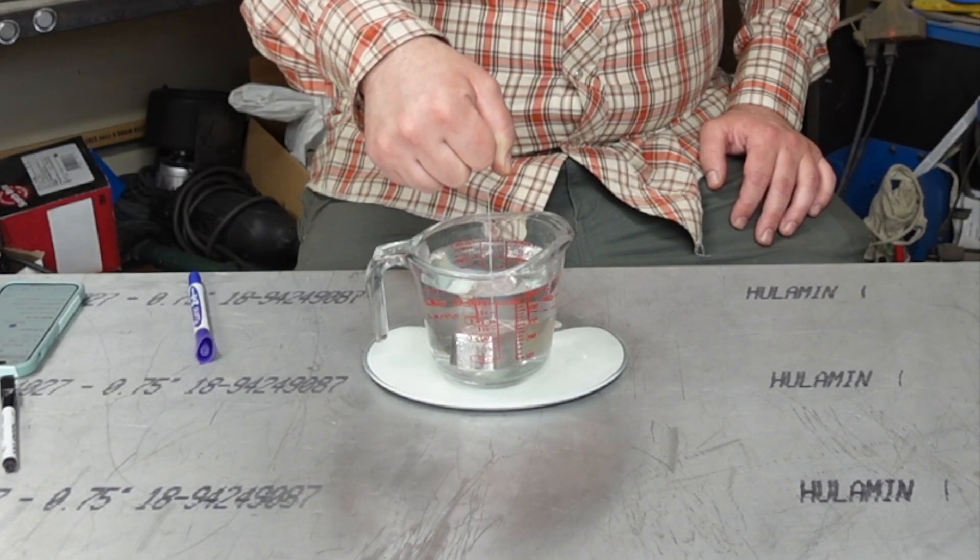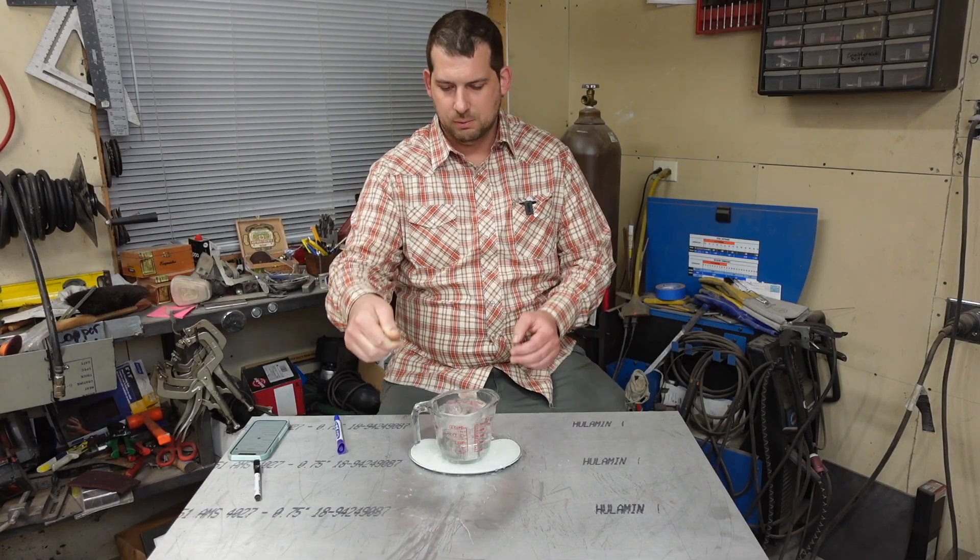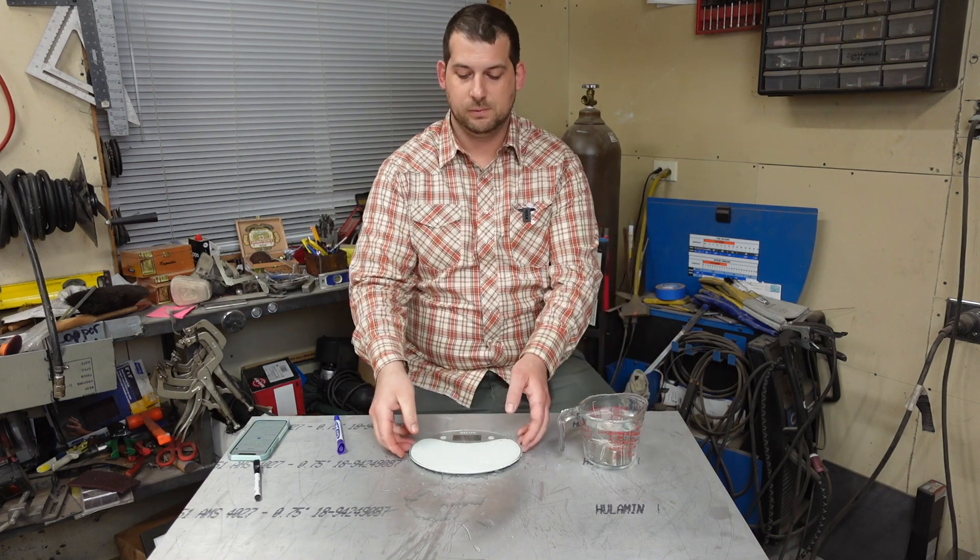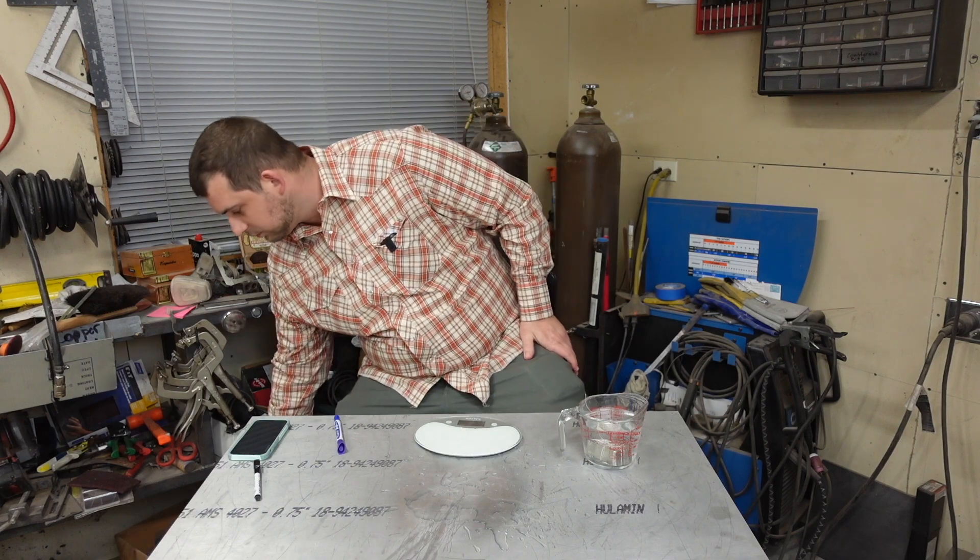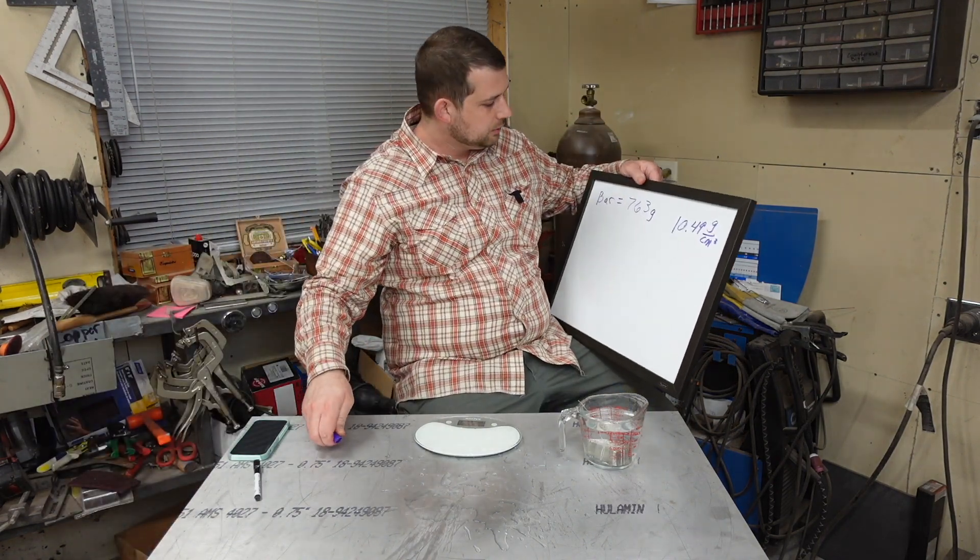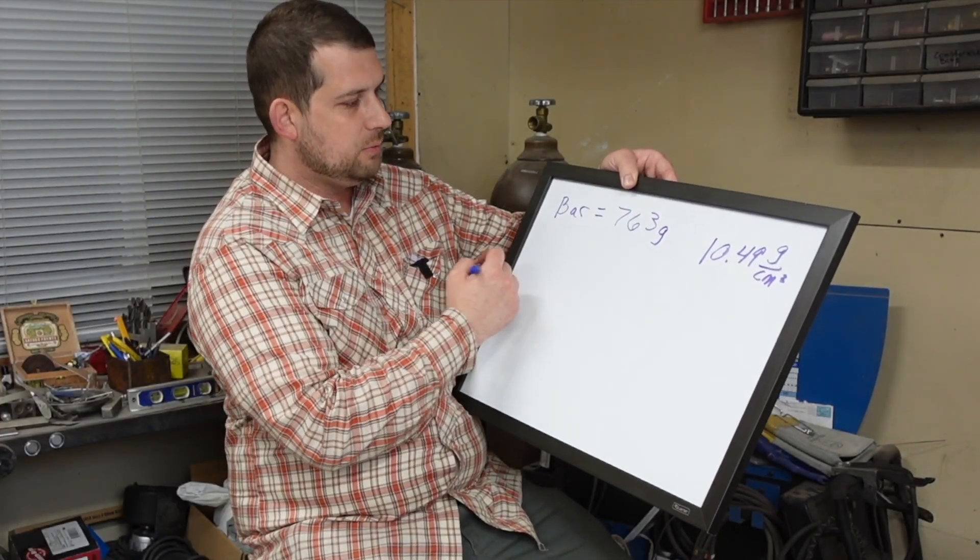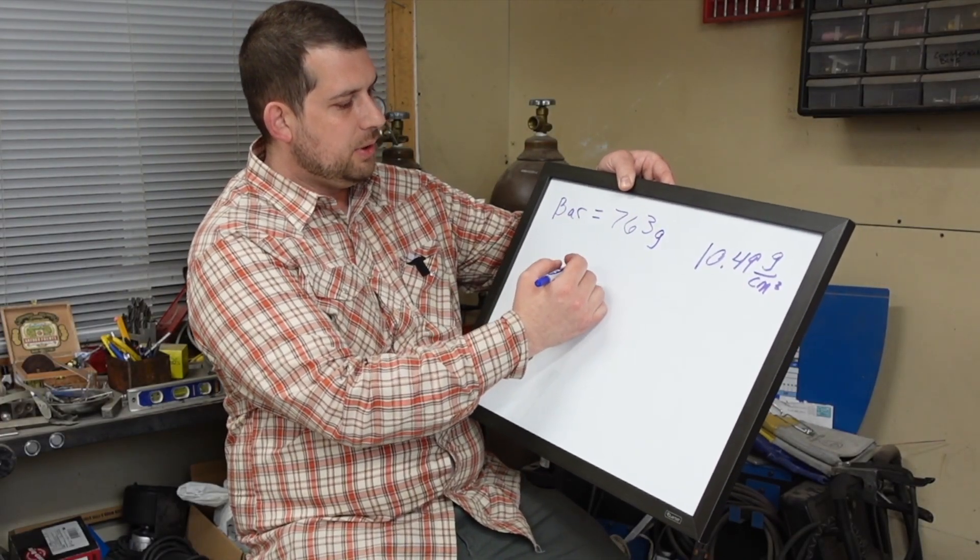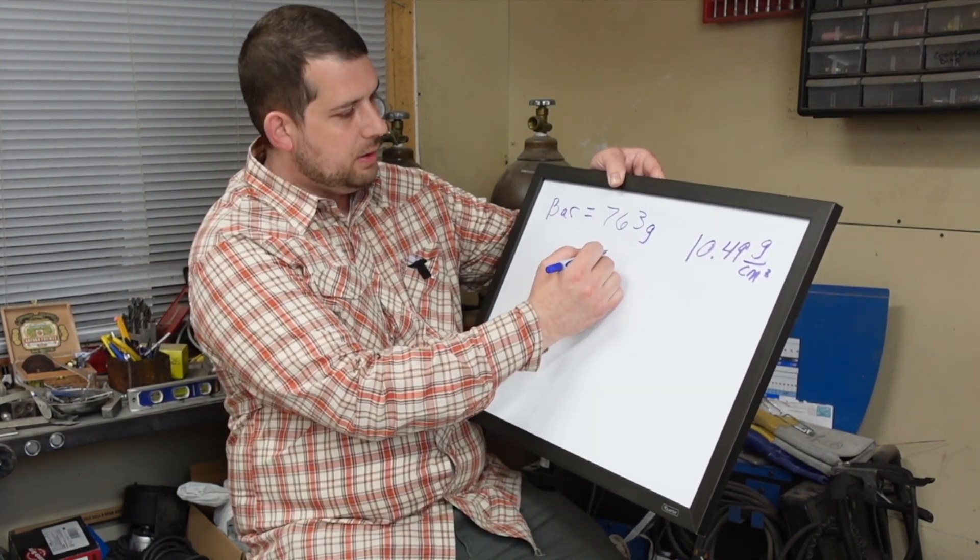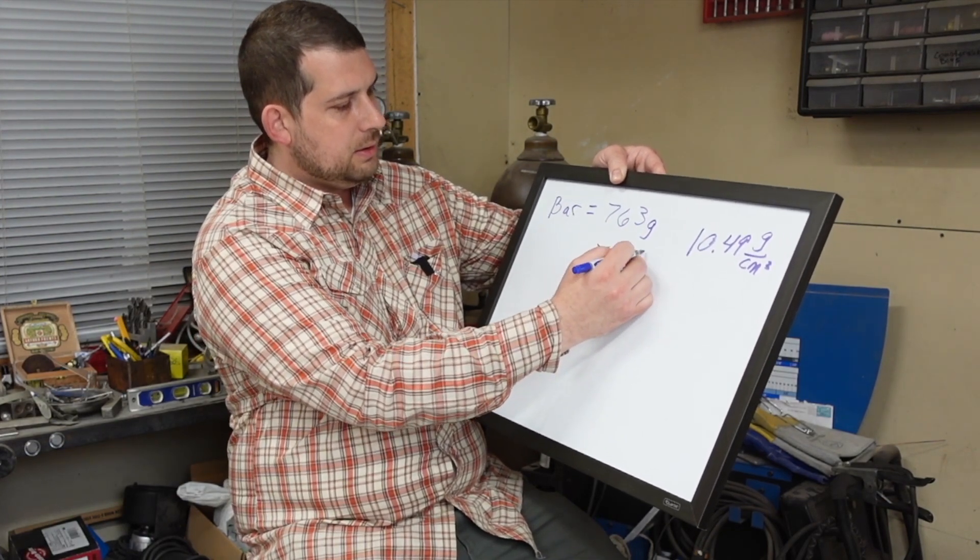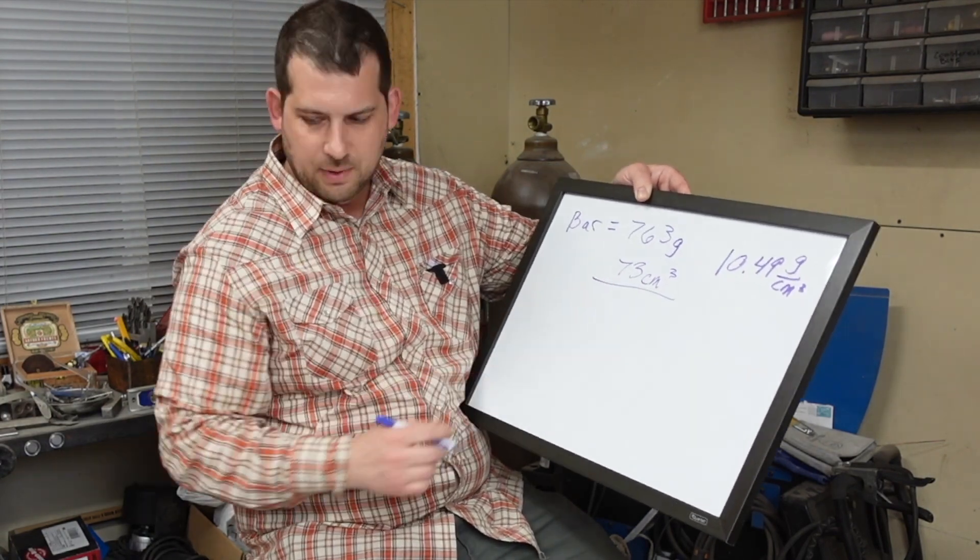And it looks like we are getting a measurement of about 73 grams, which would be the buoyancy force. And we know that water is one gram per cubic centimeter, so we know that we have 73 centimeters cubed. That's what our object is.